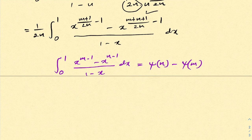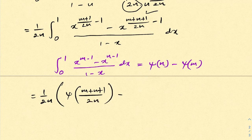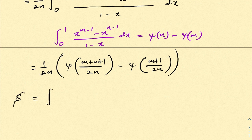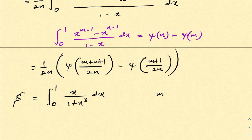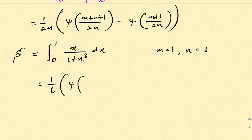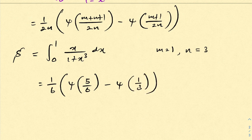Now we know our integral equals 1 over 2n times the quantity digamma of m plus n plus 1 over 2n minus digamma of m plus 1 over 2n. For our series S, the integral is from 0 to 1 of x over 1 plus x cubed dx, where m equals 1 and n equals 3. So we get 1 over 6 times digamma of 5 over 6 minus digamma of 1 over 3.